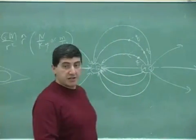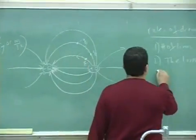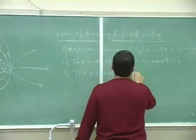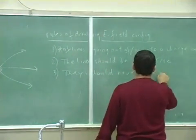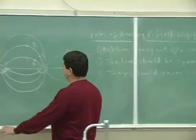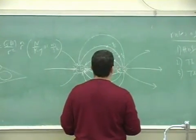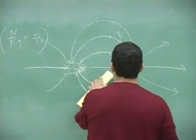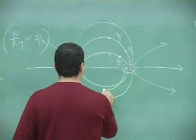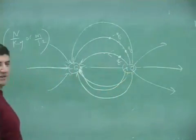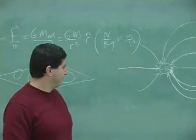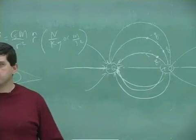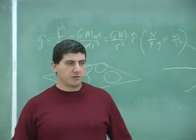Rule number three: field lines should never cross. You can't draw them crossing like this, for example. You simply can't cross them.